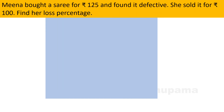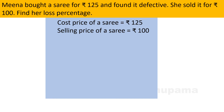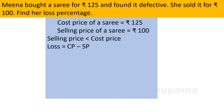Let us do one more question. Meena bought a saree for rupees 125 and found it defective. She sold it for rupees 100. Find her loss percentage. The cost price of the saree is rupees 125 and selling price is rupees 100, which is less than the cost price, so there is a loss.